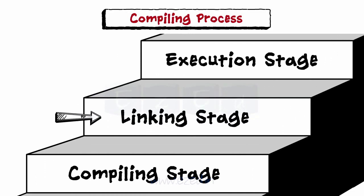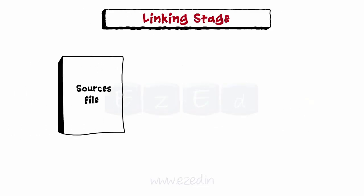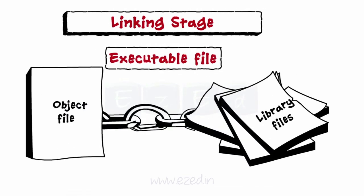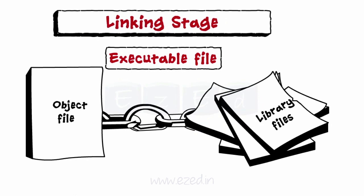Next stage is linking stage. If the source file refers to any library files, then they are needed to be linked with the object code so that an executable file is created. This is done in the linking stage.